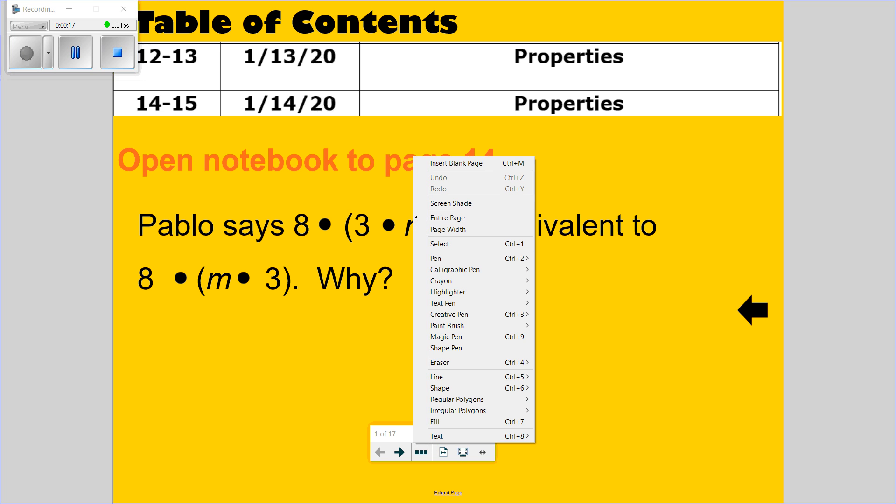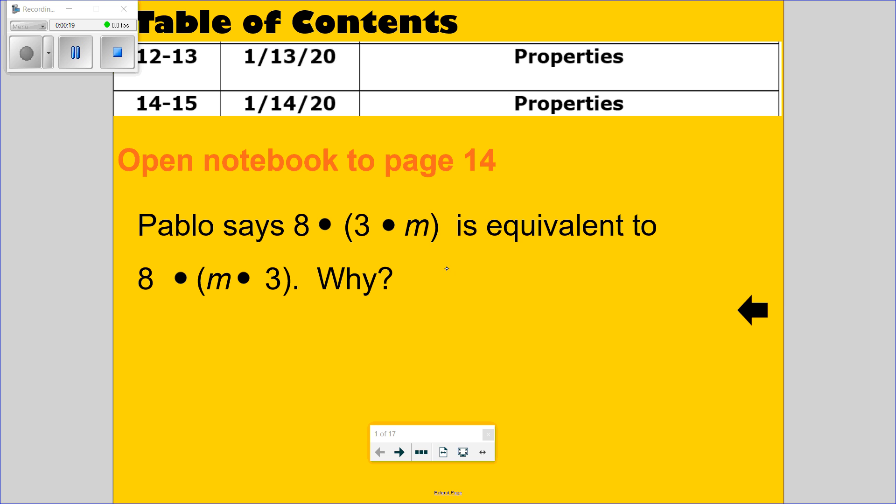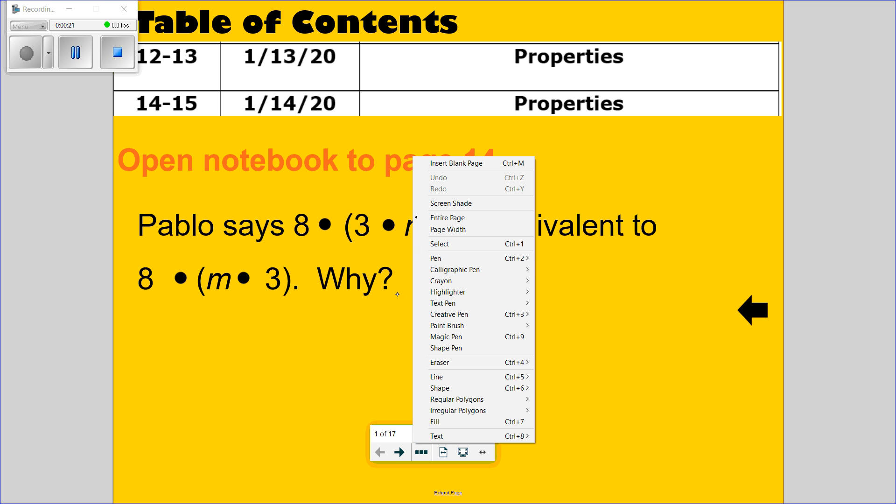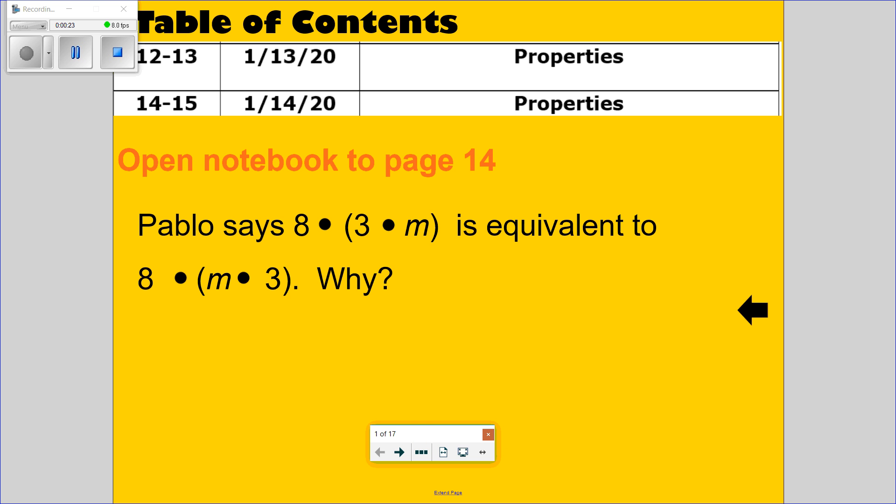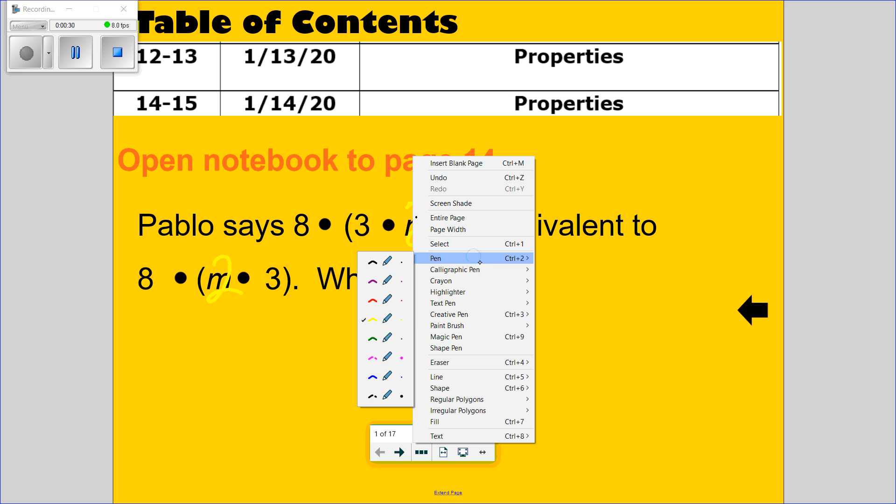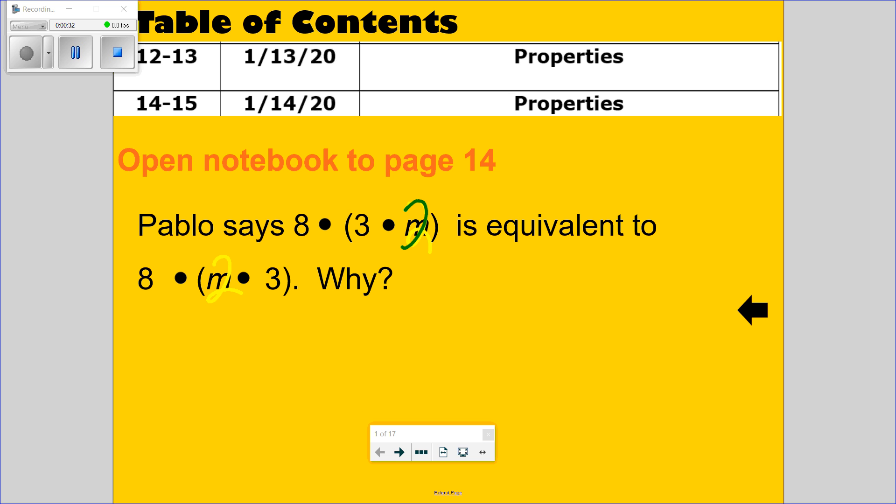There are many ways you can explain this. Here's one way you can explain it. I know I had one person in my first period who said if I replace the m with the number 2. Let me change color. Sorry about that. 2.